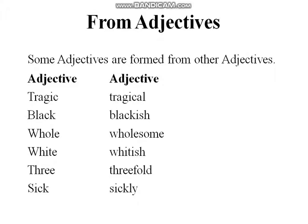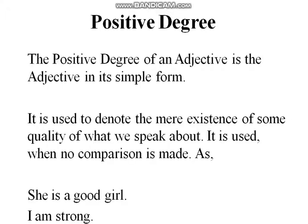In the same way, adjectives can also be formed from other adjectives. Look at the word 'tragic' — 'tragic' itself is an adjective but we can form 'tragical' from it. 'Black' becomes 'blackish', 'whole' becomes 'wholesome', 'white' becomes 'whitish', 'three' becomes 'threefold', 'sick' becomes 'sickly'. In this way different adjectives can be formed from other adjectives.